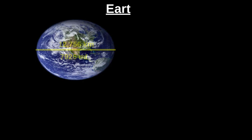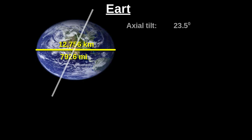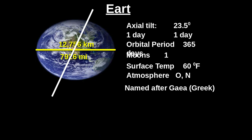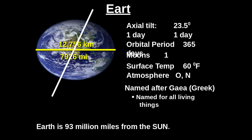The next planet is Earth — 12,000 miles across. Axial tilt is 23.5 degrees. One day is one day. Orbital period is 365 days. One moon. Surface temperature is 60 degrees Fahrenheit. Atmosphere is oxygen and nitrogen. Named after Gaia, Greek for all living things. Earth is 93 million miles from the sun.